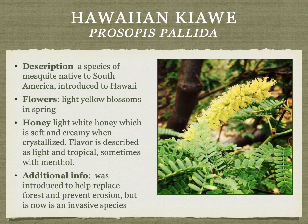Hawaiian kaiawe is a mesquite native to South America, introduced to Hawaii to prevent erosion but now an invasive species crowding out native plants. The bees like to work its flowers and it produces a great light white honey that is soft and creamy. The flavor is described as light and tropical, sometimes with menthol — though that menthol character was not personally detected.